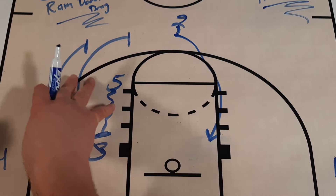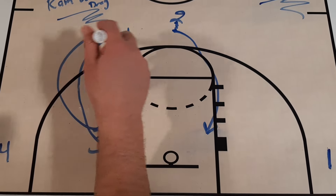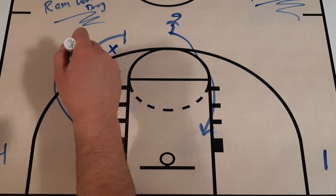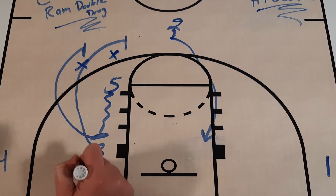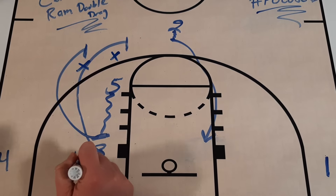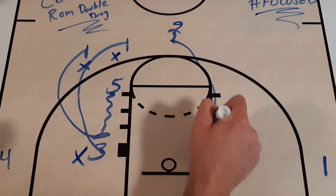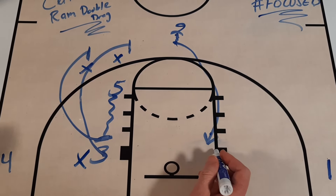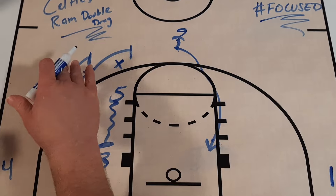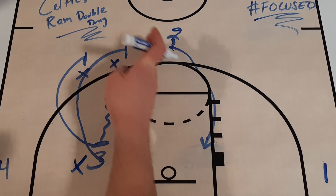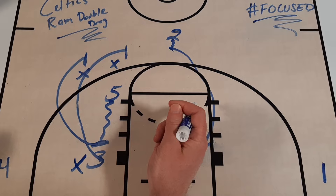What I like about this is you have three players on this side occupying help defenders who have to come up and defend the double drag ball screen. There's a defender in the corner who could be a tag defender. Brown makes a quick move to the rim and finishes with the left hand. First time he used the screen; second time he rejects it, attacks the paint, and gets another two points.